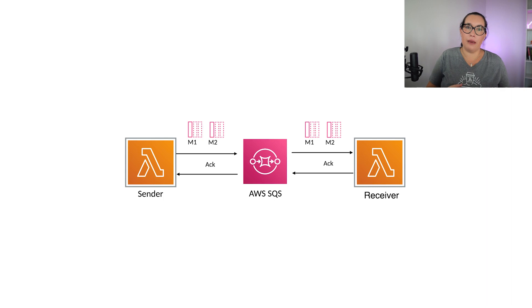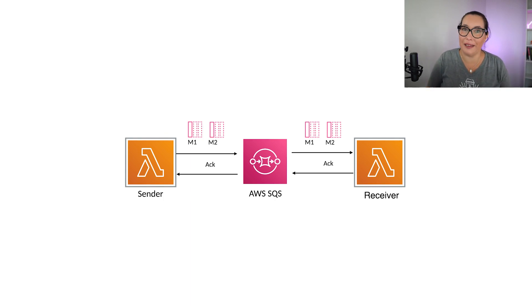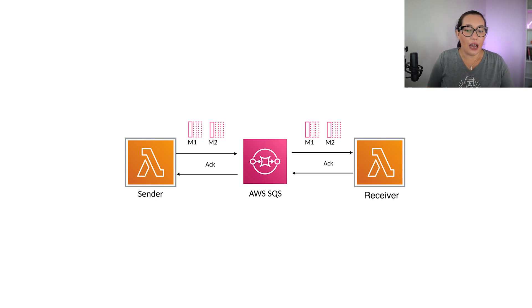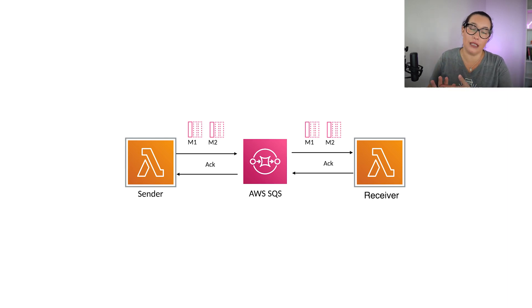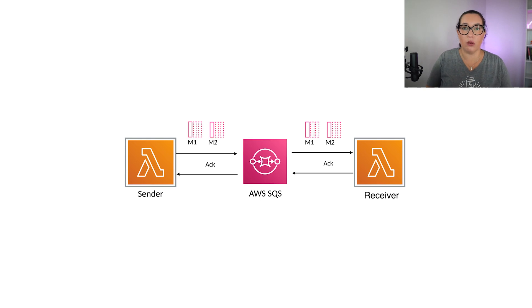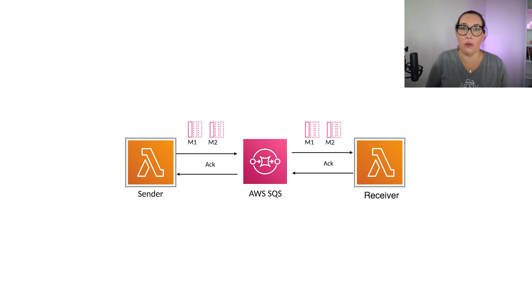You invoke the first function and it sends the message. The second function takes it in a batch — one at a time, ten at a time. If there is any problem and the queue cannot send the message to the second Lambda function, it will put it in a dead letter queue. That is totally managed by the queue, and you can attach a dead letter queue — that's a pattern you need to have when working with asynchronous events.